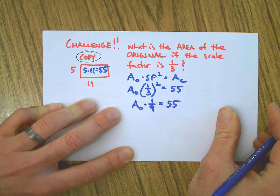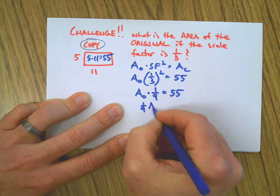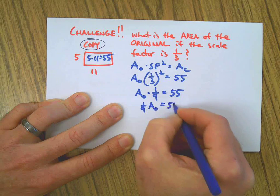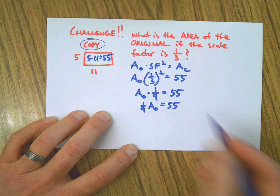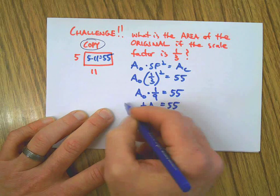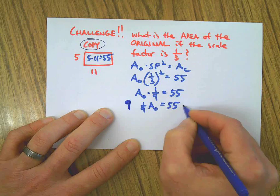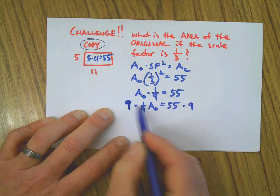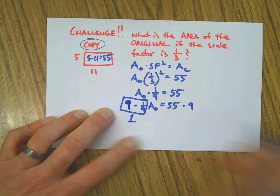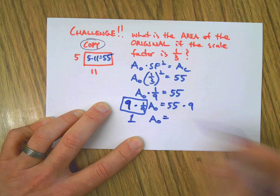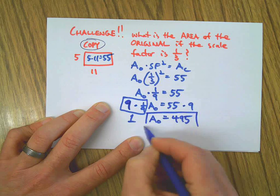So here is the original times one ninth, right? Because one third times one third. And then we could rewrite this in an algebra sort of way. And what we have here is a fractional coefficient. That's a different lesson, different thing all together. But the way you get rid of a fractional coefficient is you multiply by the reciprocal. Okay, multiplying by the reciprocal here makes a one. That leaves me with the area of the original equals 495.